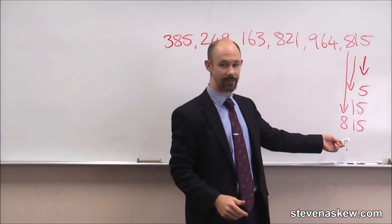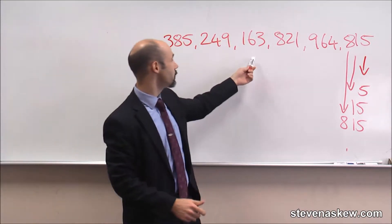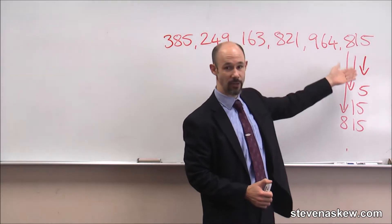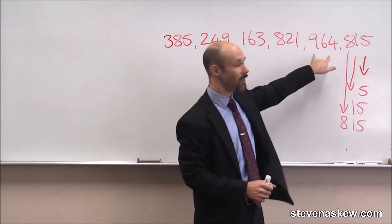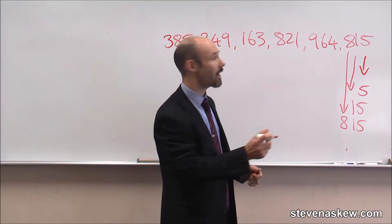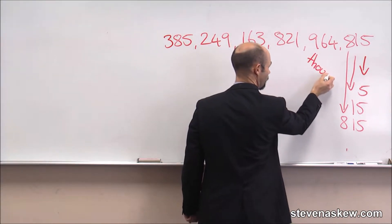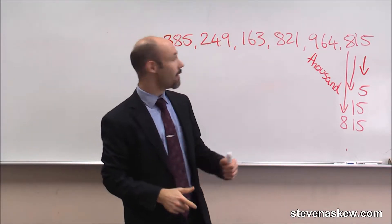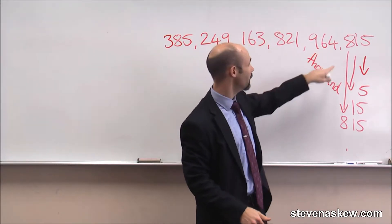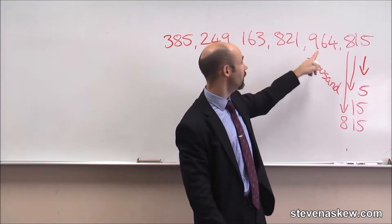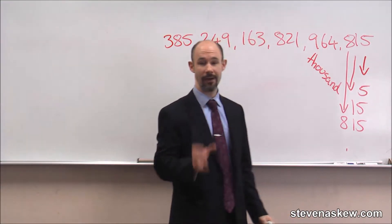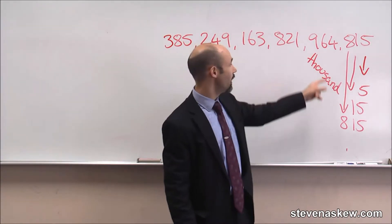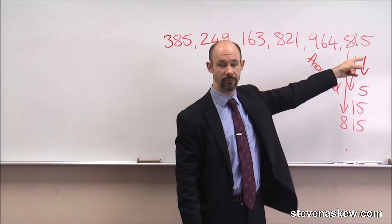If you can read that, and you can remember what each group is called, you can read a number as big as this. Here we have eight hundred and fifteen. The next group of three — these are thousands. We have the unit, the ten, the hundred. We have four, sixty-four, nine hundred and sixty-four. All you have to do is read that and add the word thousand. So, nine hundred and sixty-four thousand, eight hundred and fifteen.